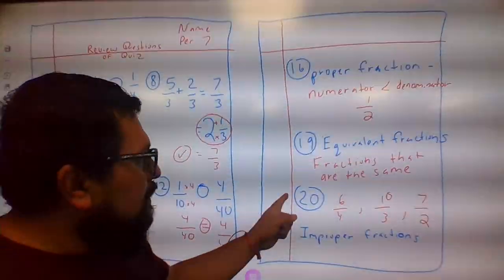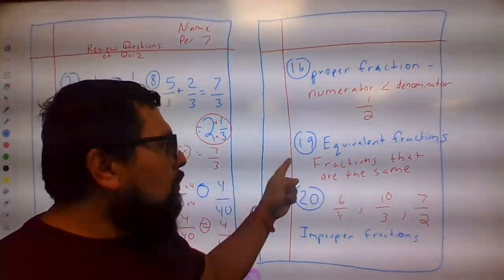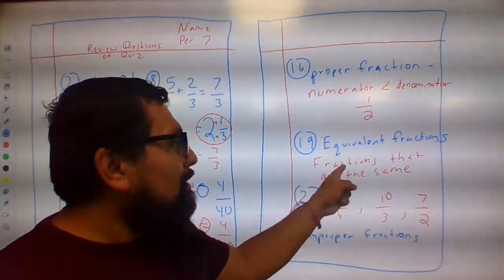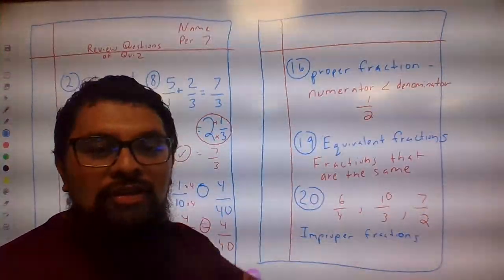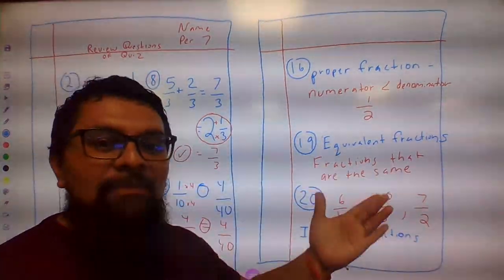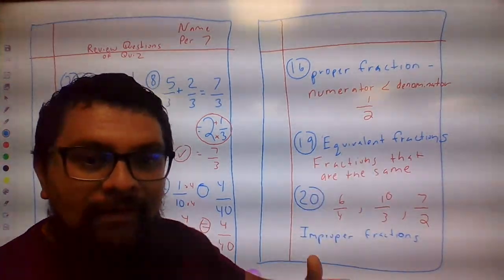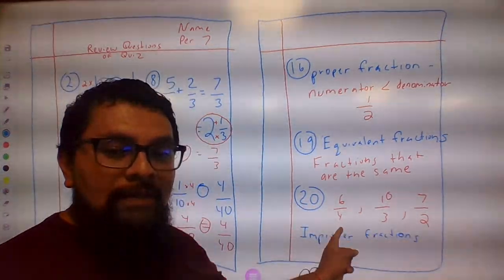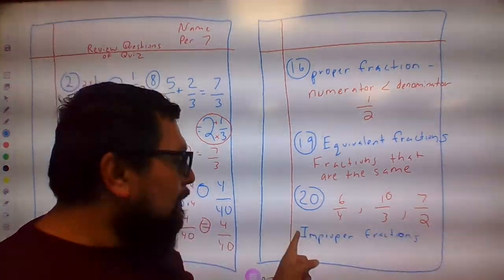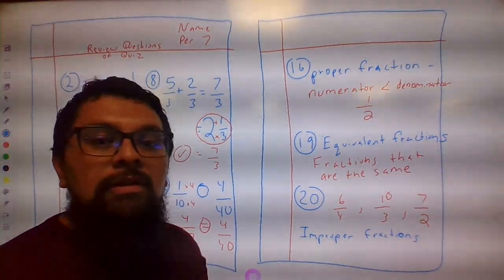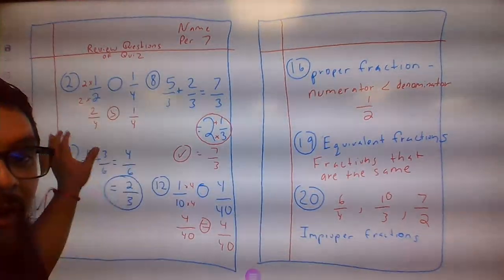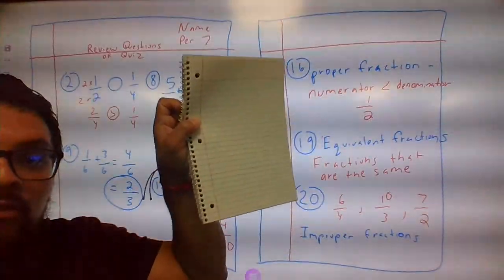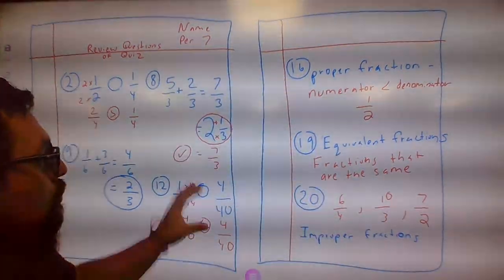Here's number nineteen and number twenty. For number nineteen, they were asking the definition of equivalent fractions. Equivalent fractions are fractions that are equal — they have the same value, just bigger or smaller. For example, one half is the same as two fourths, and the same as five tenths. For number twenty, the question gives you six over four, ten over three, seven over two — those are all examples of improper fractions. Make sure you guys get all these written down on your paper, whether you're using loose paper or page one of your notebook.